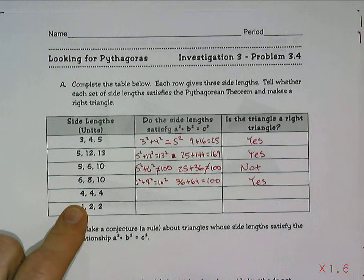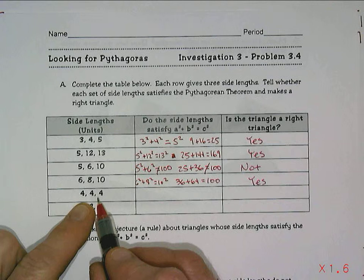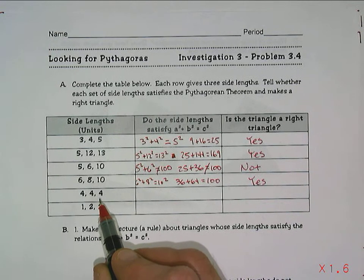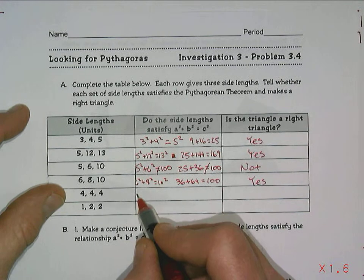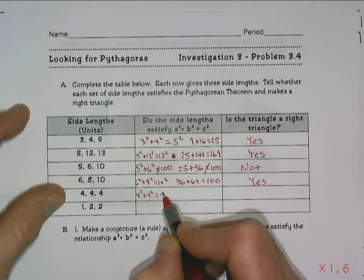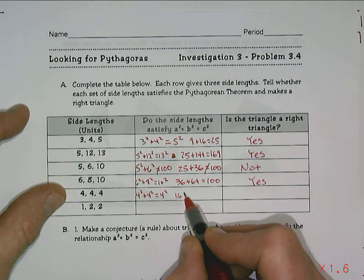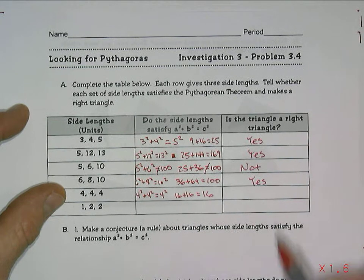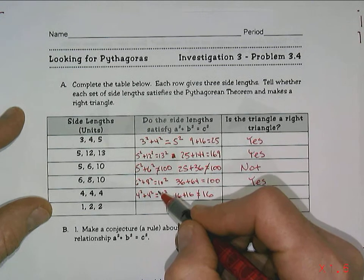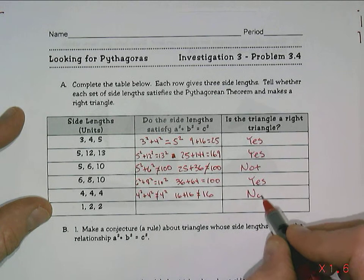Now the next one's interesting, because all three side lengths are the same. This is an interesting question of whether or not a triangle with three sides the same length could be a right triangle. We can prove it: 4 squared plus 4 squared, does that equal 4 squared? I think it might be obvious that can't work, because you'd have 16 plus 16 equaling 16. That can't be true, so we know that if all three sides are the same length, we do not have a right triangle.